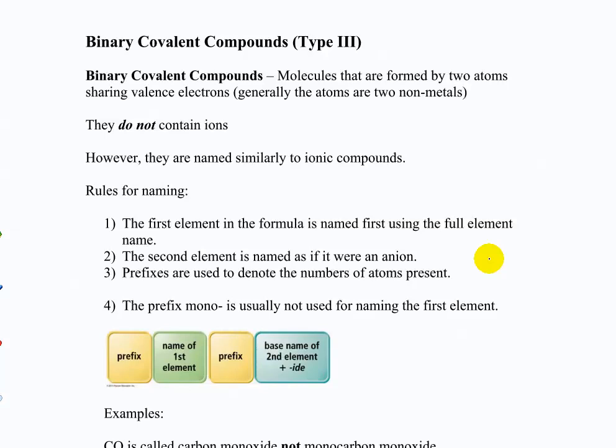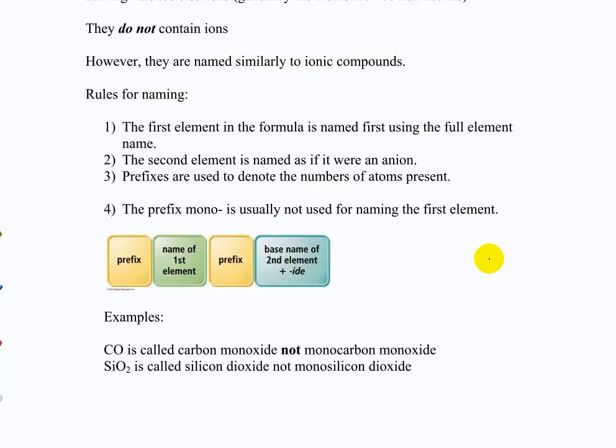Let's move to covalent compounds. Covalent compounds are named a little bit differently, which is nice because it helps you separate them. Here's the rules for naming covalent compounds. I think they're actually a bit easier. First element in the formula is full element name. Second element is named as though it were an anion, even though in a covalent compound it's not. And then you use prefixes to denote the number of atoms present. So you've got mono, di, tri, tetra, penta, whatever.